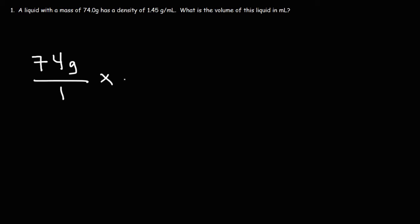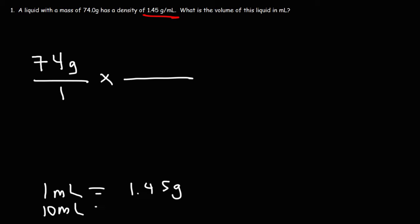Next, we're going to convert grams to milliliters using density. Now let's think about what this means. We have a liquid with a density of 1.45 grams per milliliter. That means that one milliliter of that liquid has a mass of 1.45 grams. Ten milliliters of that same liquid has a mass of 14.5 grams. So the density tells us the relationship between mass and volume.